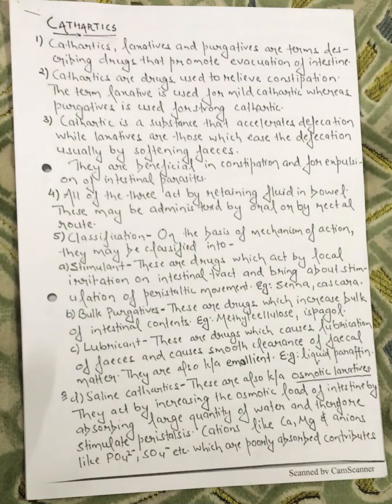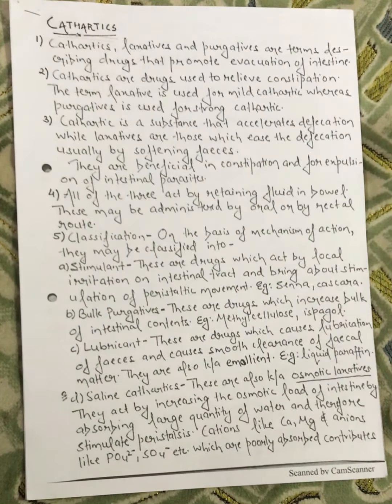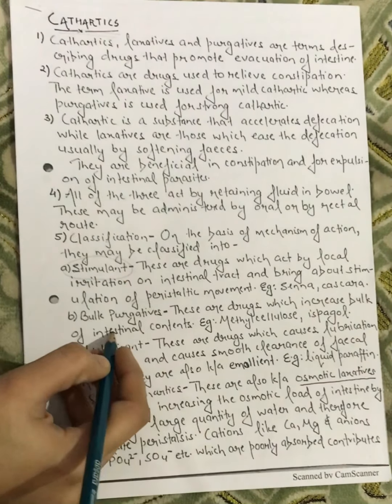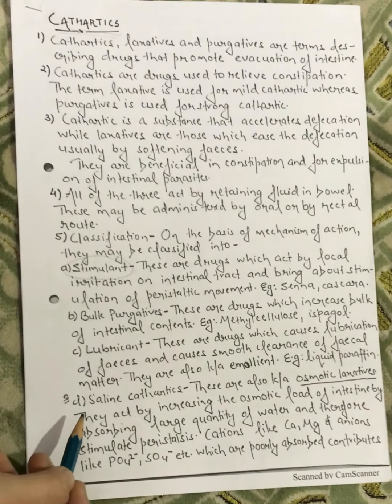We are all familiar with enema — where we insert it into the rectum to overcome constipation. So these drugs can be given orally or by the rectal route. On the basis of mechanism of action, cathartics are divided into stimulants, bulk purgatives, saline purgatives, and lubricants.